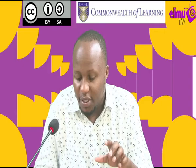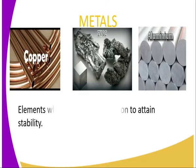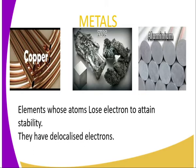Metals — let's have some examples. We have copper metal, we have zinc metal, we also have aluminium. Elements whose atoms lose electrons to attain stability are basically metals. And that's how we identify metals from the periodic table, by looking at whether the atom will gain or lose an electron.